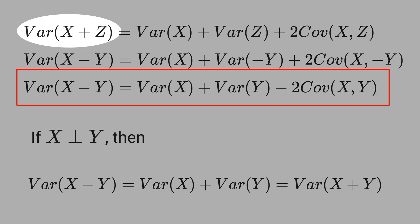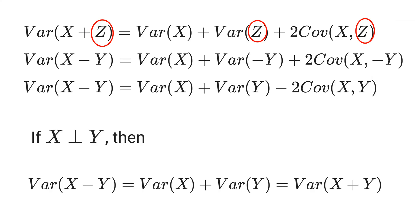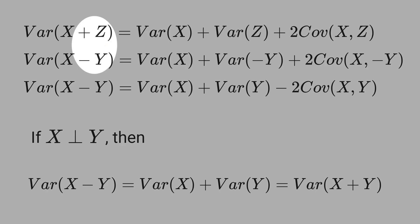In the previous video, I derived that variance of x plus z equals variance of x plus variance of z plus 2 times covariance of x and z. Actually, in the previous video, I used the variable y rather than z, but it doesn't matter. The trick here is to replace z by minus y, and you do here and here as well.